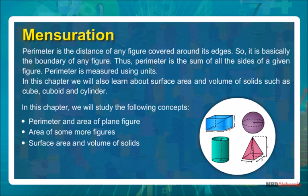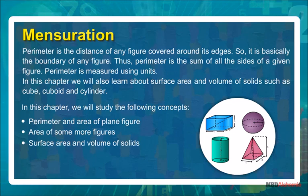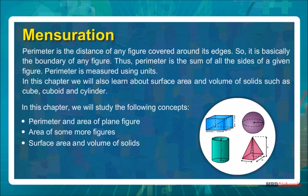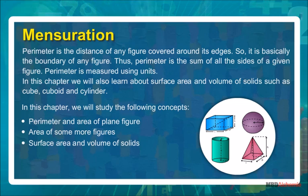Perimeter is measured using units. In this chapter, we will also learn about surface area and volume of solids such as cube, cuboids, and cylinders. We will study the following concepts: perimeter and area of plane figures, area of some more figures, and surface area and volume of solids.